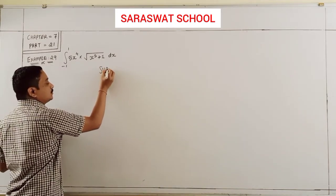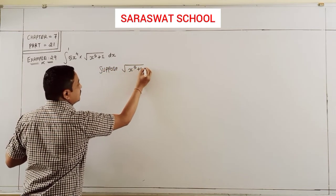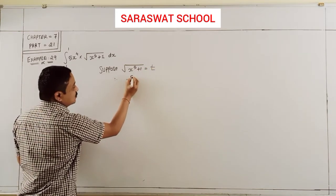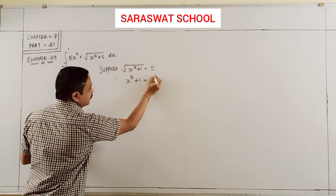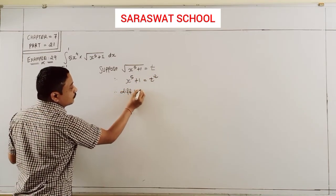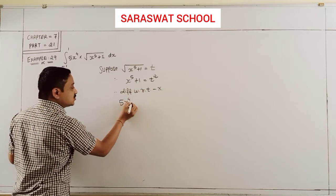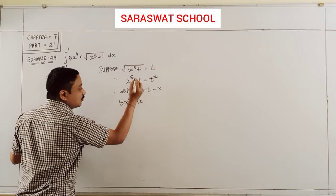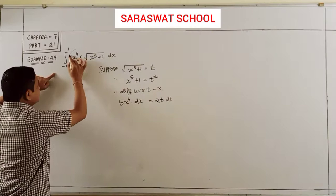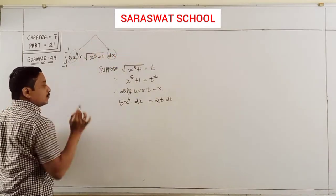Suppose the square root term equals t. So x⁵ plus 1 equals t squared. Taking the derivative with respect to x, we get 5x⁴ dx equals 2t dt. Check — 5x⁴ is here, and these two are ready.